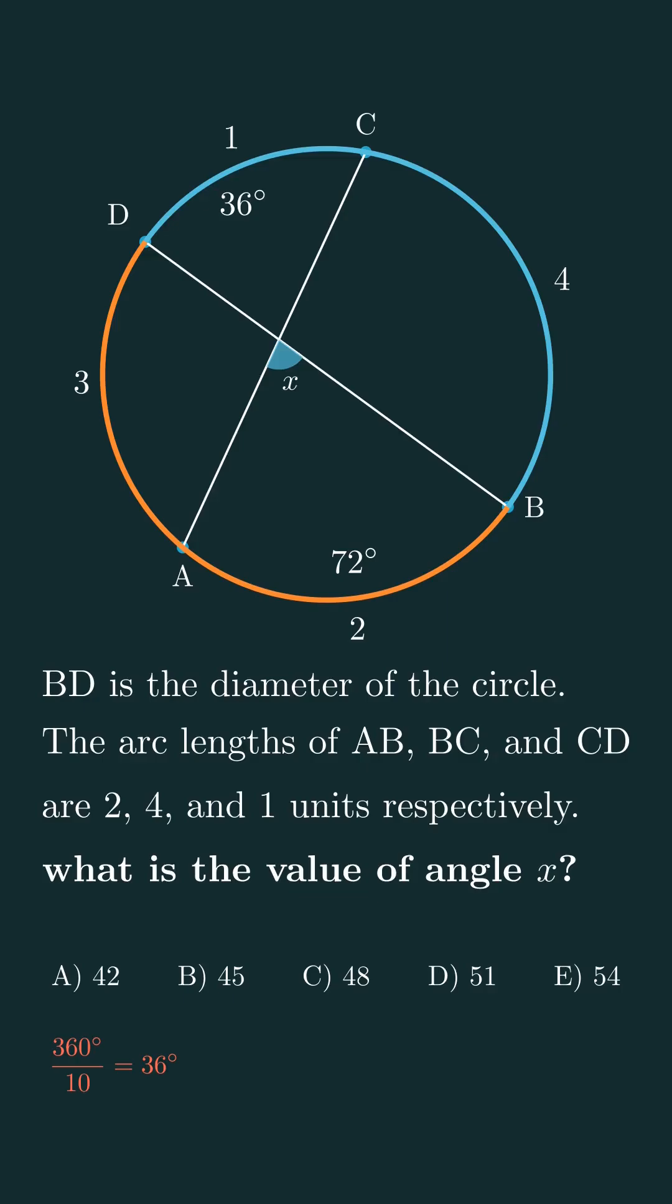Now, how do we find x? In my longer video where I explained circle angles, I showed the formula for this type of problem. x is equal to half the sum of the measures of arc CD and arc AB.